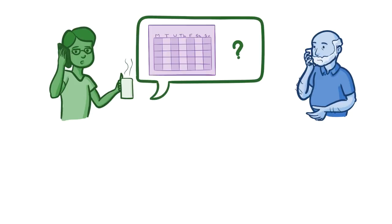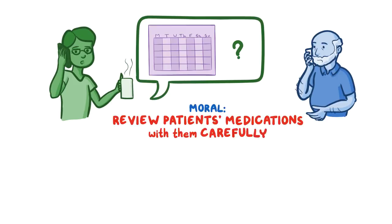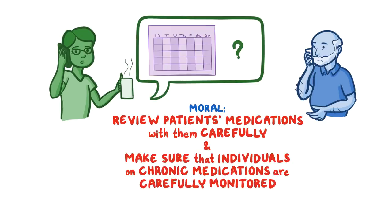Ultimately, without being on such a high dose, Joseph would probably not have developed severe amiodarone toxicity. The moral? Review patients' medications with them carefully and make sure that individuals on chronic medications are carefully monitored and educated.